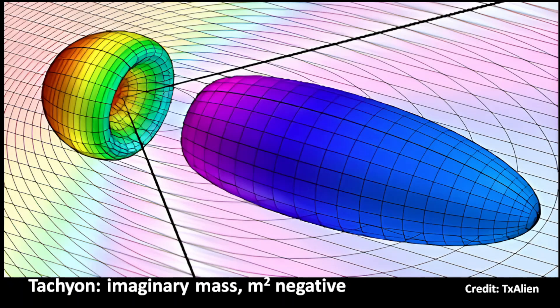An interesting property of superluminal tachyons is their mass. Tachyons could have an imaginary mass. In this case, their squared mass would be negative.